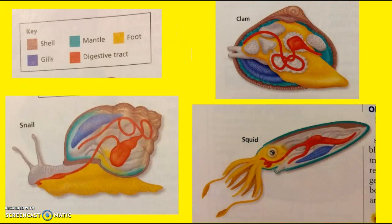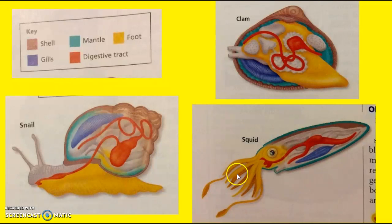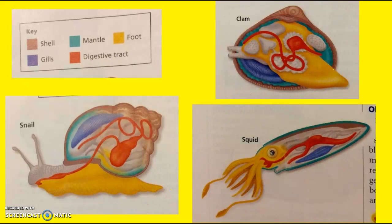Here are three types of mollusks, and you can see that even though their shape is different, their parts are pretty much the same. The snail's foot is right here, whereas the squid has a foot that is the tentacles, and here's the foot of the clam, just to give you an idea.